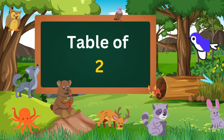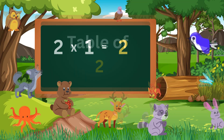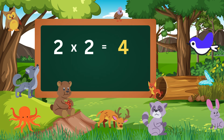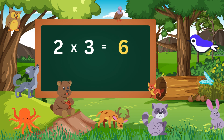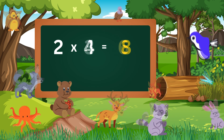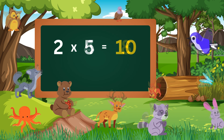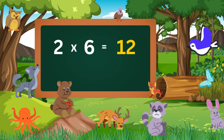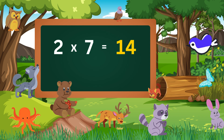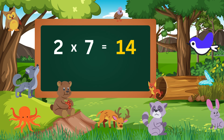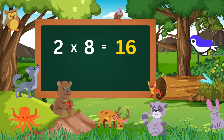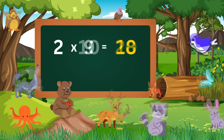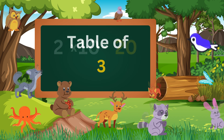Table of two. Two ones are two. Two twos are four. Two threes are six. Two fours are eight. Two fives are ten. Two sixes are twelve. Two sevens are fourteen. Two eights are sixteen. Two nines are eighteen. Two tens are twenty.